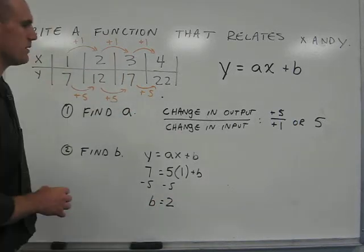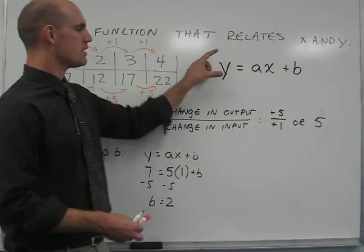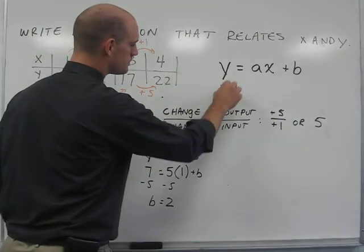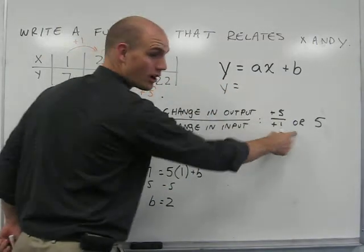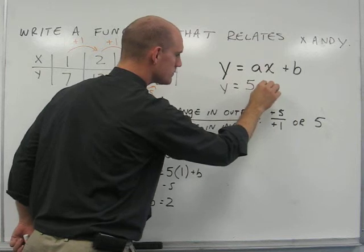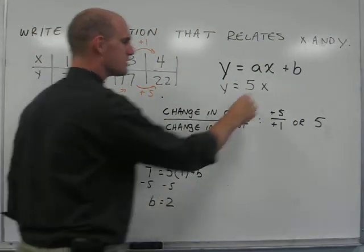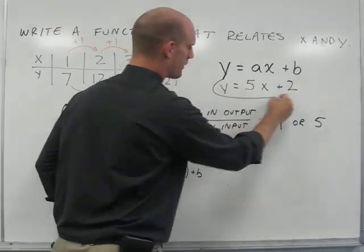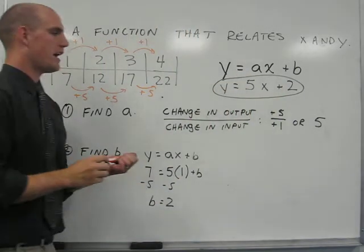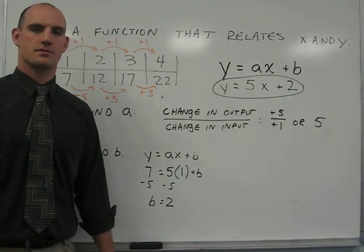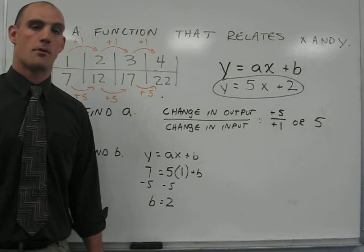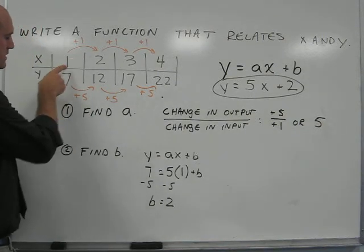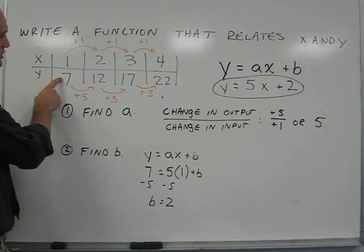In our final step, we come back to our original function equation and find that y equals a, or 5, times x plus b, or 2. So, our function that relates x and y is y equals 5x plus 2. Upon examination, we find that in each case, 5 times x plus 2 is equal to y.